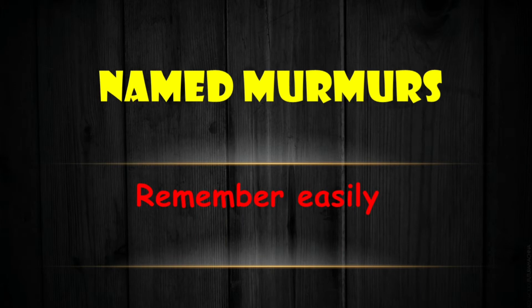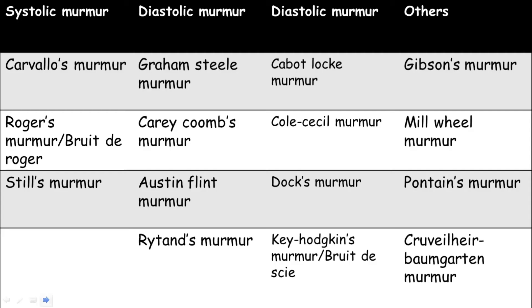Hello toppers, today we are going to discuss how to remember the named murmurs easily, because this is one of the high-yielding areas where we will get direct questions. In systolic murmurs we have Carvalo's murmur, Roger's murmur or Bruit de Roger, and Still's murmur. In diastolic murmurs we have Graham Steel, Carey Coombs, Austin Flint, Rytand's, Cabot-Locke, Cole-Cecil, Dock's, and Key-Hodgkin murmur or Bruit de Shy. Other murmurs include Gibson's murmur, Mill Wheel murmur, Pontaine's murmur, and Cruveilhier-Baumgartner murmur.